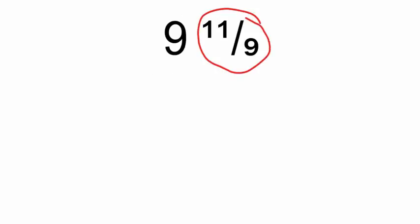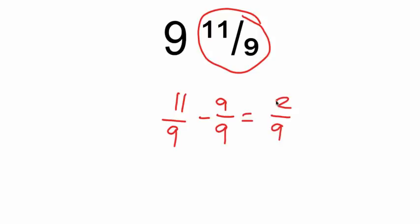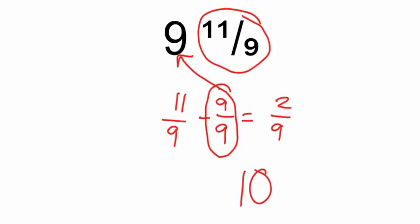Okay, same thing here. Right now we have an improper fraction. How many wholes can we take out of eleven-ninths? So if I subtract out nine-ninths — if I take one whole out — I'm going to have two-ninths left because eleven minus nine is two. And I've taken that whole out, so I'm going to give that whole back to the first number. And I'm going to have ten and two-ninths. Ten and two-ninths is the same as nine and eleven-ninths.